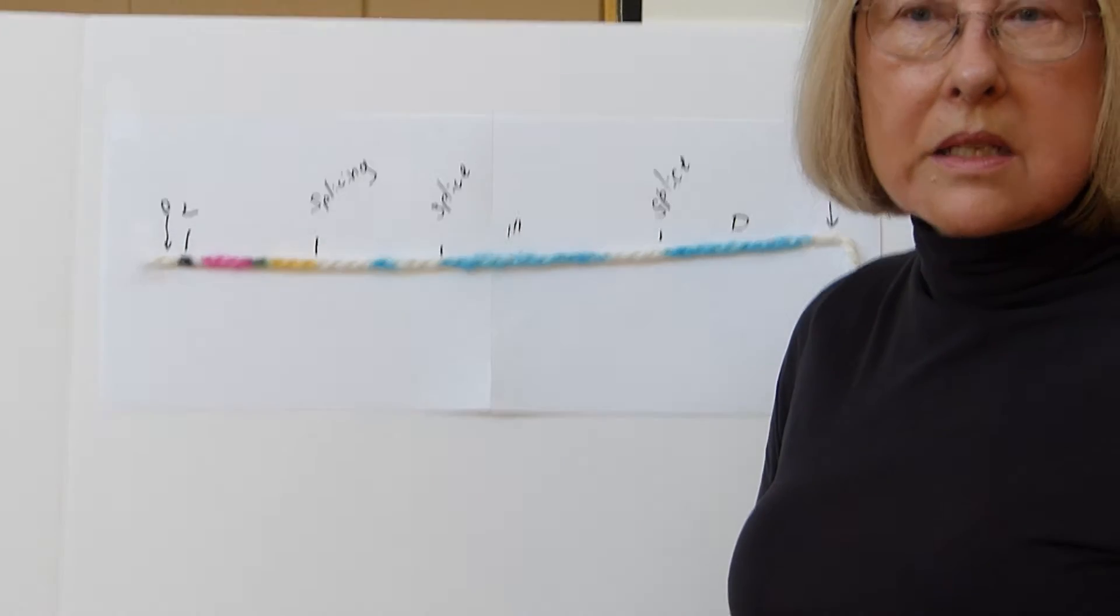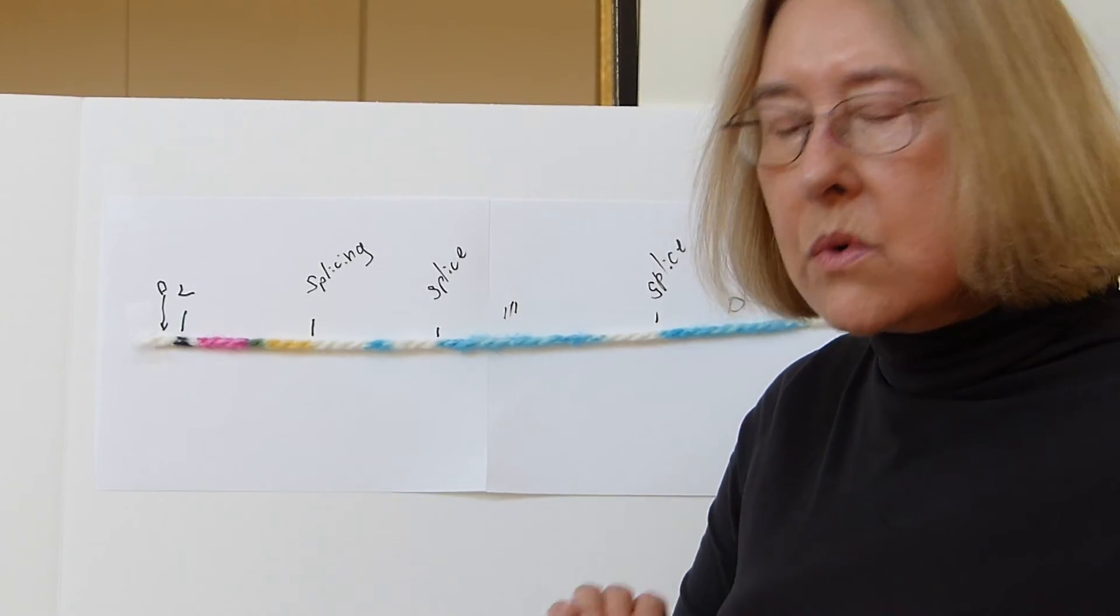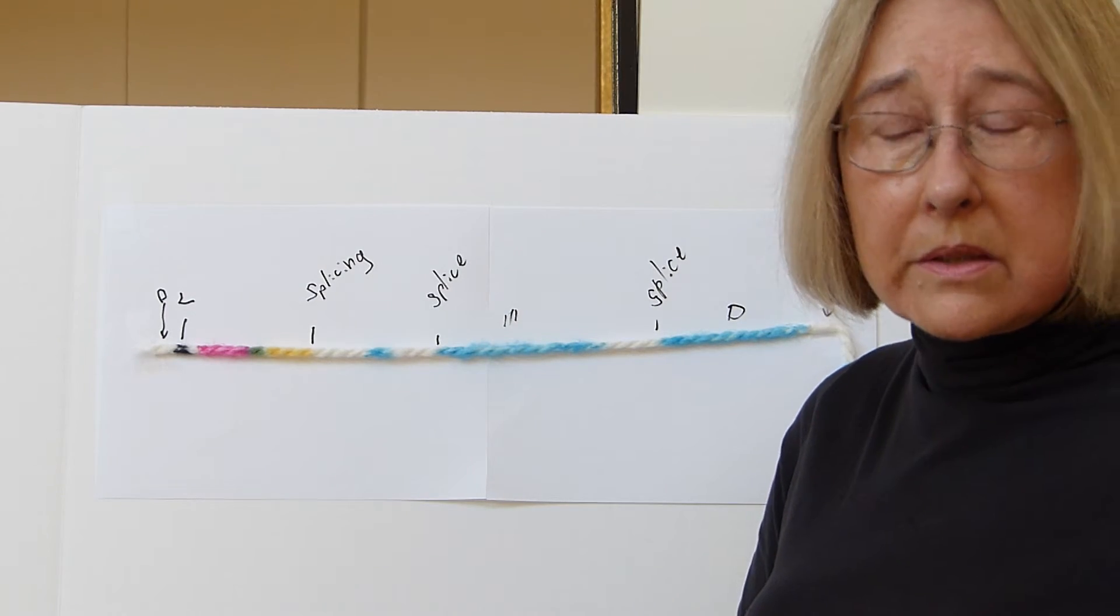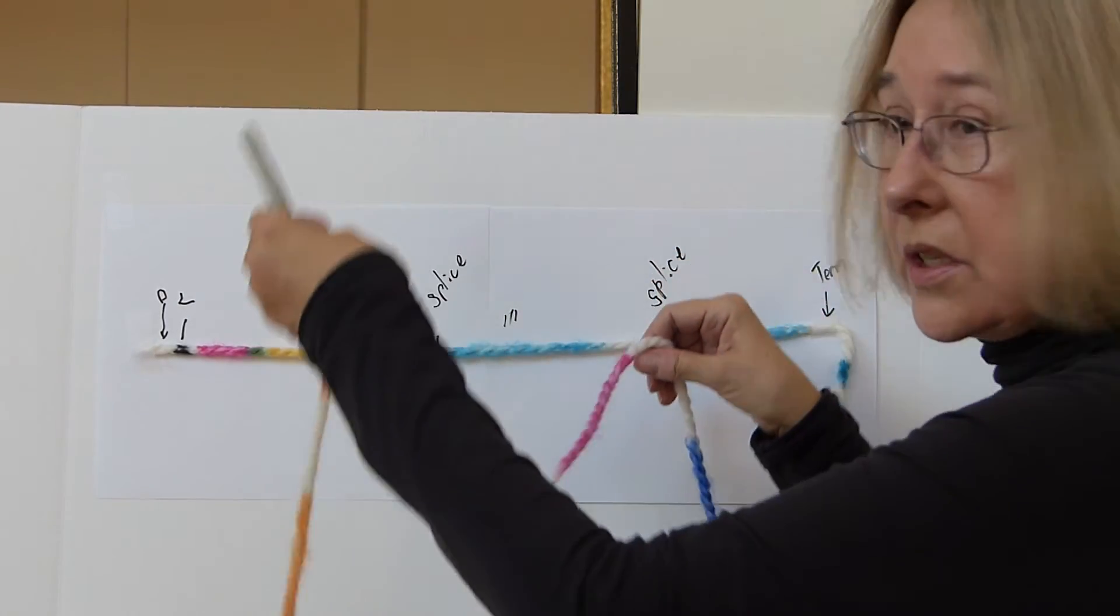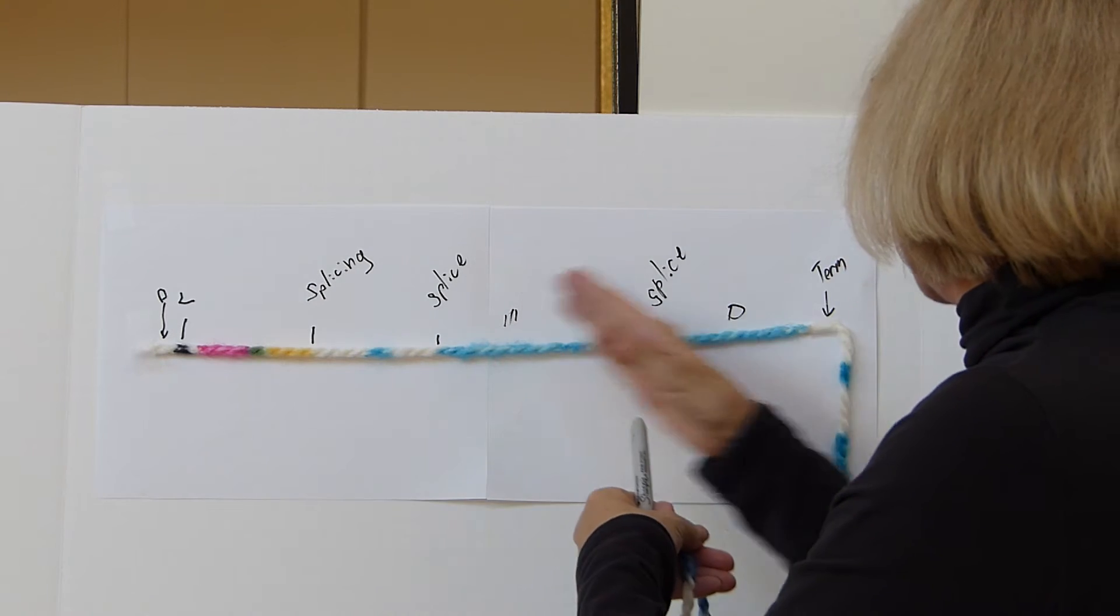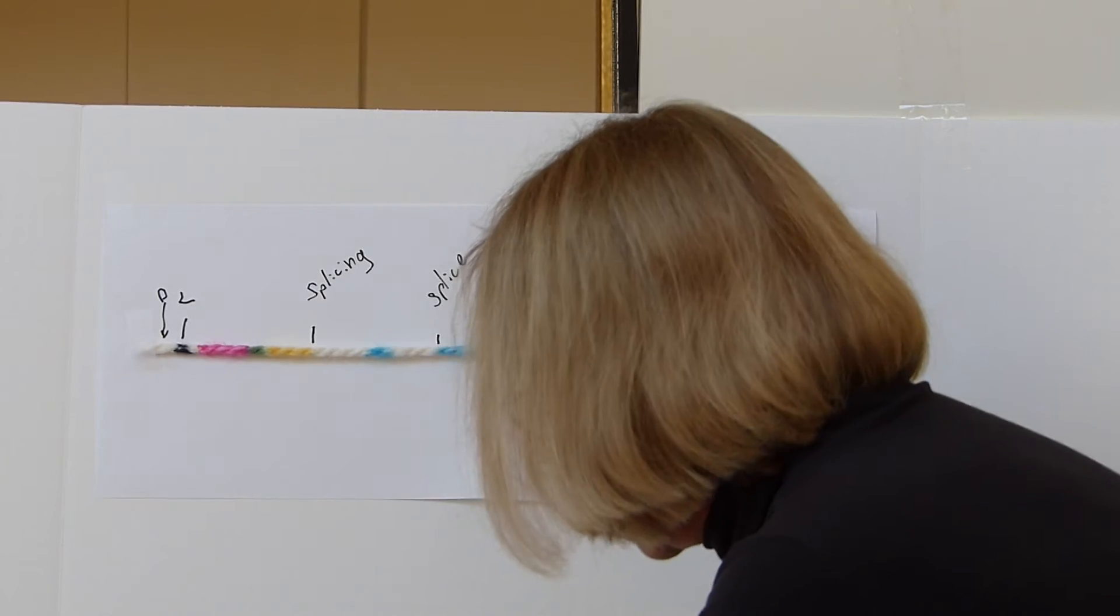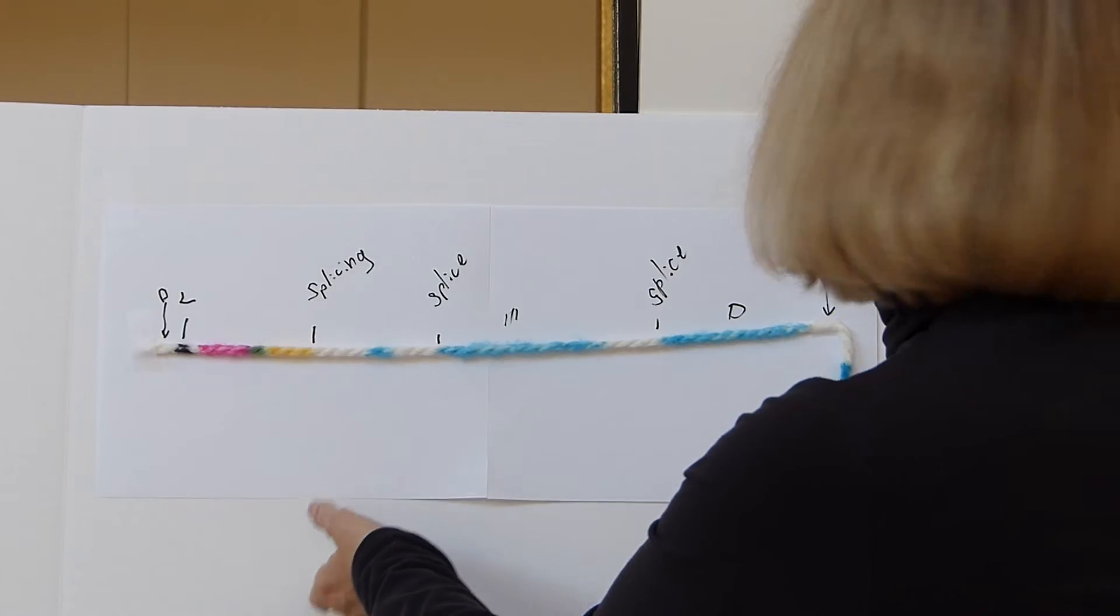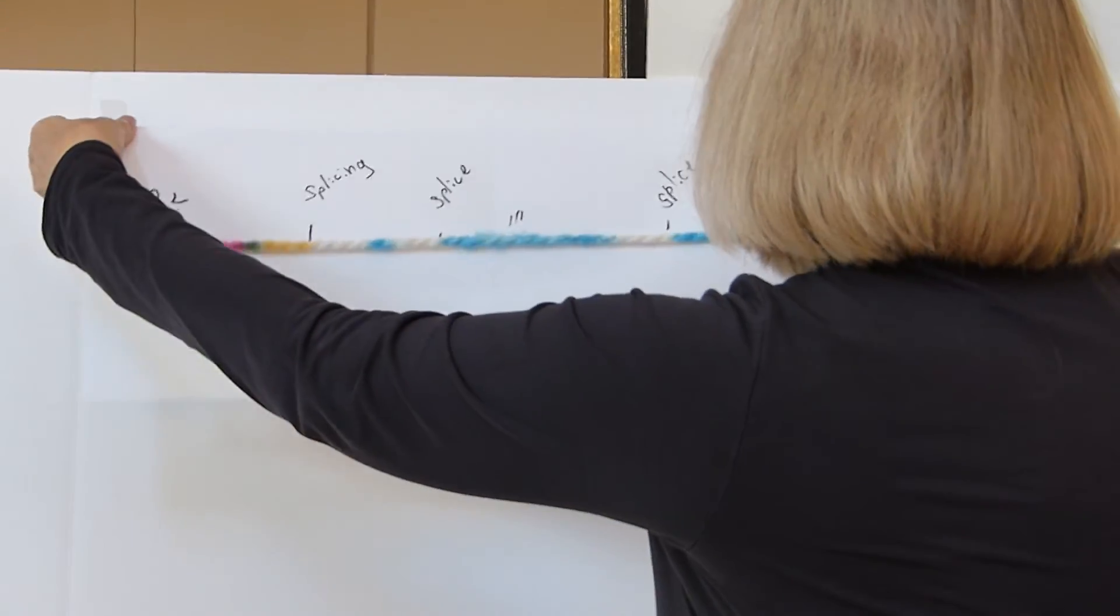But now, supposing you're ready to class switch. That is, you're ready to make an antibody that is more attuned to the particular problems that you're having with a particular infection. What you want to do is get something from the other regions, and to do that you need to cut out the M and the D and anything else in between them and the variable region. I'm going to take this variable region and this part and just move it over for now.